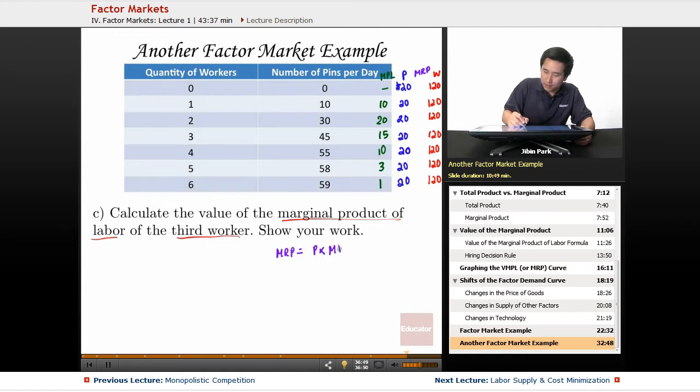What is the MRP going to be? The MRP is going to be the price times the MPL. At this point it's zero, then 200, then 400, then 300, back to 200, and then you have a huge drop-off—60, 20, and then 20. In terms of being able to figure it out, it's pretty easy. You hire the first worker, second worker, third worker, fourth worker—you don't hire the fifth worker.